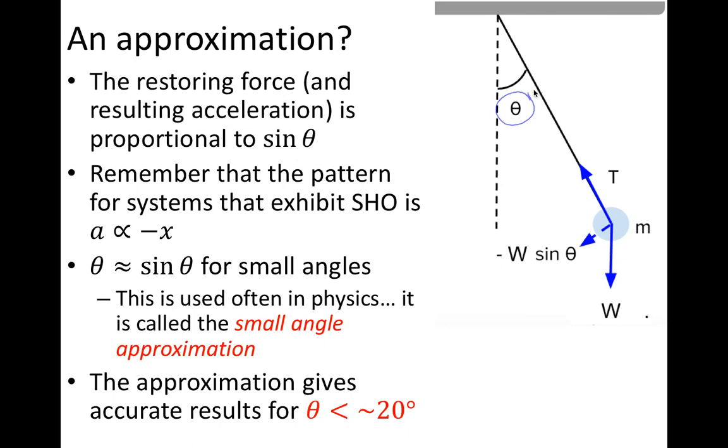It'll only have a difference of about 2% from the prediction to the measured value. Once you start getting up to 30%, the error is going to grow to about 5%. And then once we get up to something like 70 degrees, we're looking at a difference of like 23%. So as long as the angle is quite small, then the period does not depend on the amplitude, and it is matching the predicted value from the formula pretty closely.